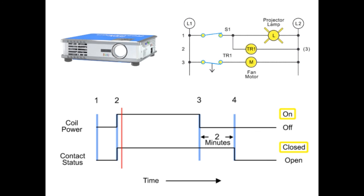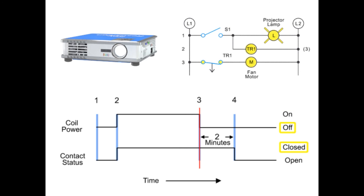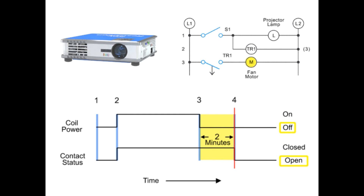The projector bulb and the cooling fan remain on as long as switch S1 stays closed. When switch S1 is opened, the projector bulb turns off and power is removed from the timer. Contacts TR1 remain closed for a preset period of time and then open, causing the cooling fan to turn off. This off-delay timed open circuit is generally set to adequately cool the projector equipment before it shuts off.